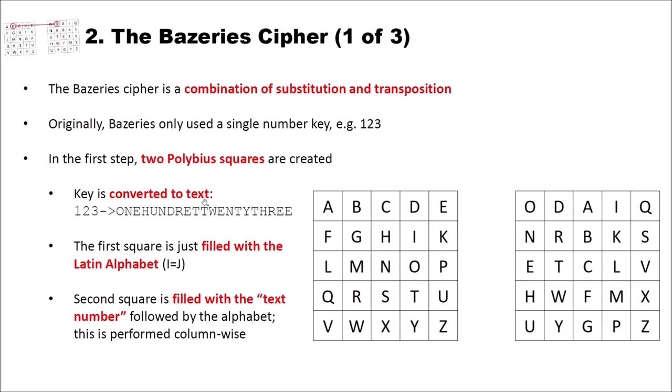The first square is just filled with the Latin alphabet. And keep in mind since we only have 25 positions here, we only have or can have 25 letters. That means the letter I equals the letter J. And the Polybius square is filled from left to right and top to bottom. So we have A, B, C, D and so on until X, Y and Z.